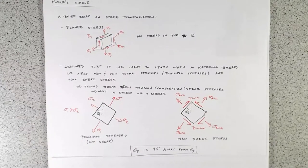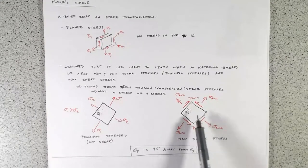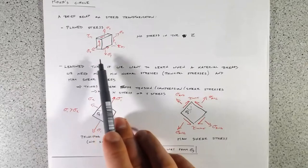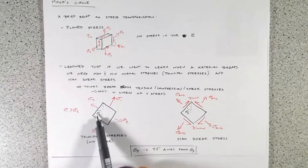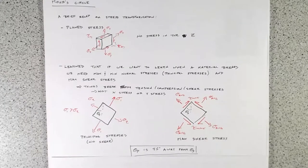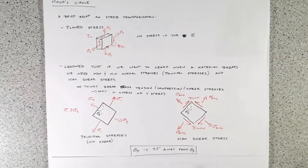When we've got our maximum normal stresses, those are called our principal stresses. The angle at which that occurs is called the principal plane. And in that stress state, there is no shear — it's only tension and compression, only stresses acting normal to the surface.